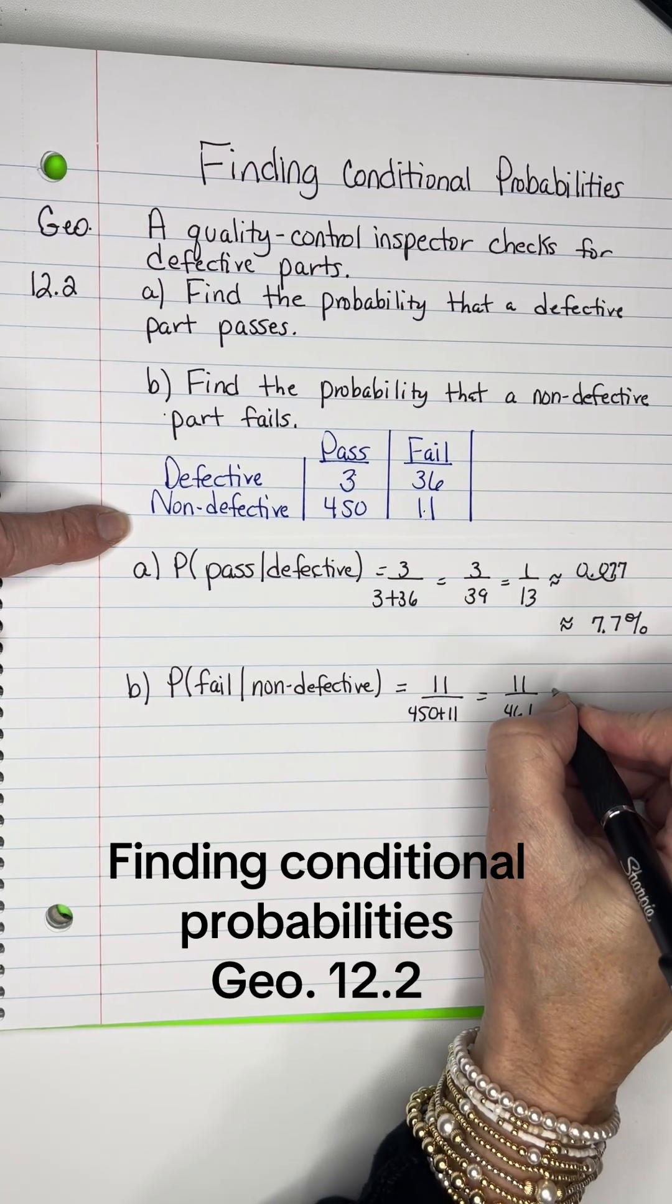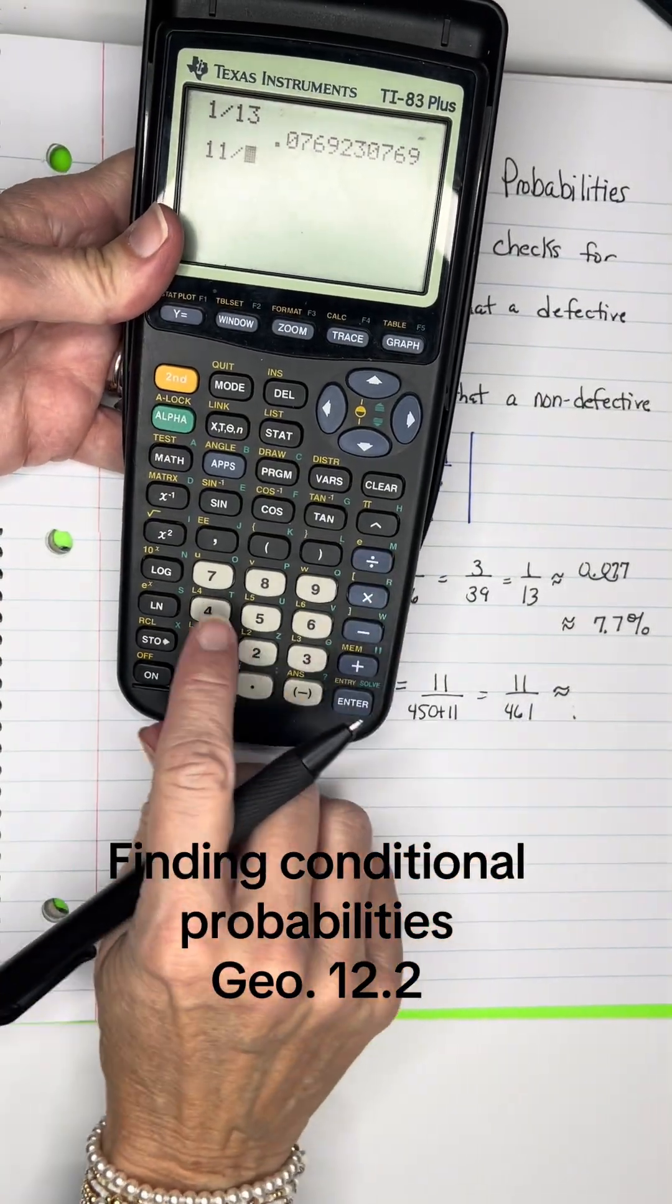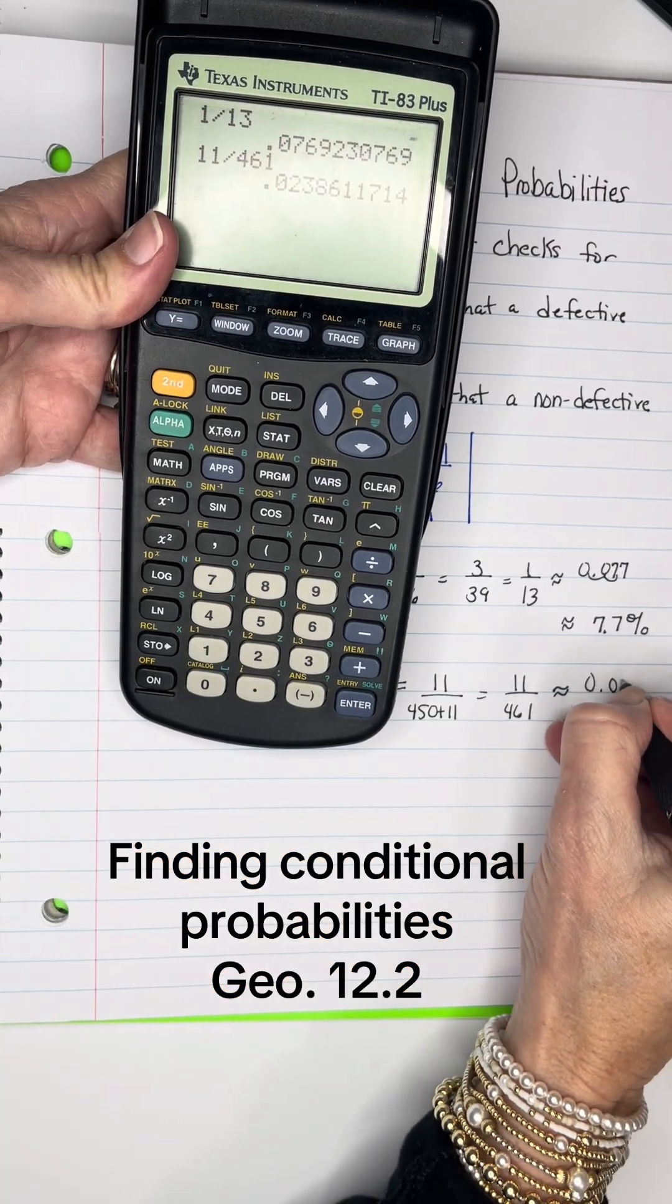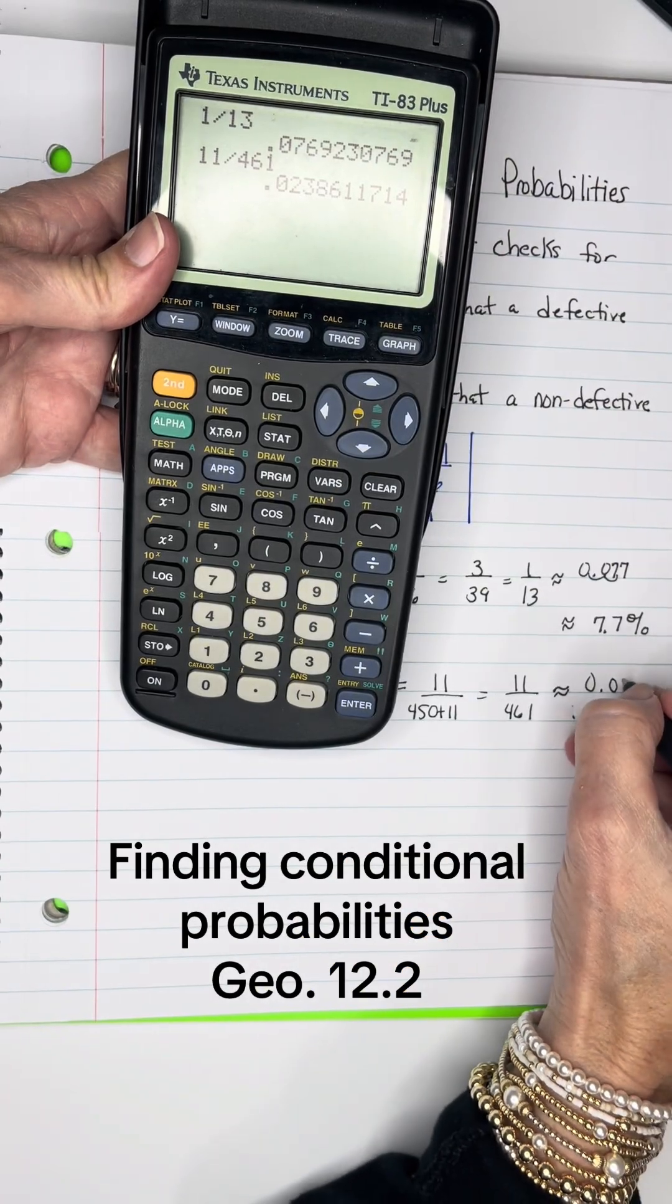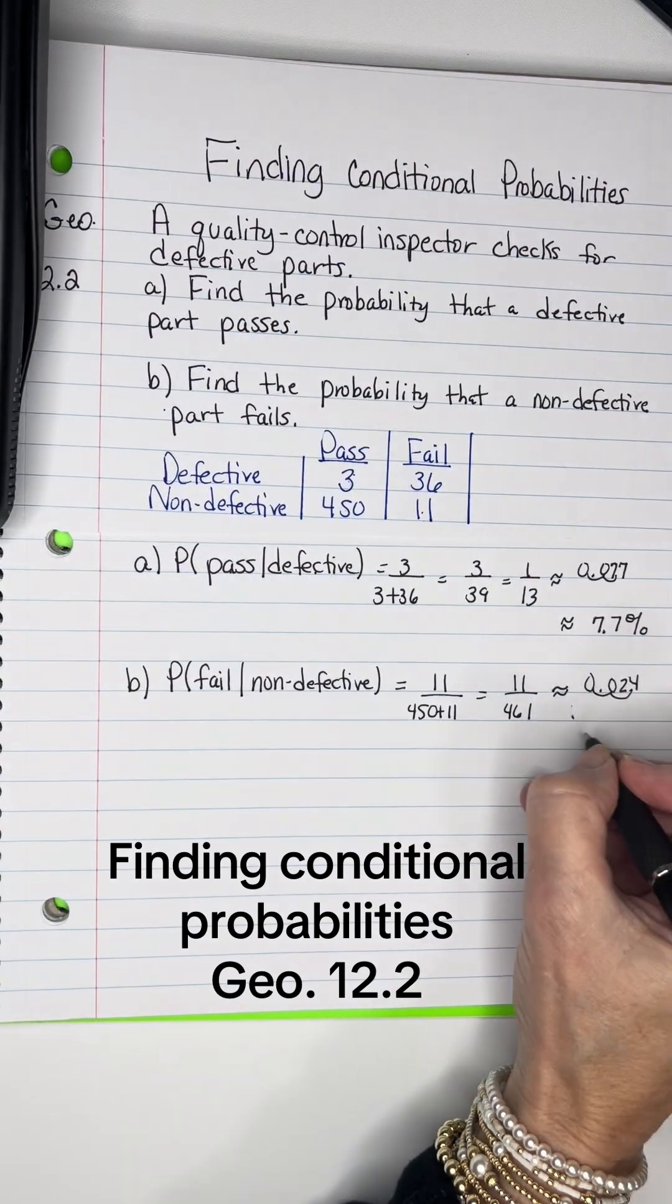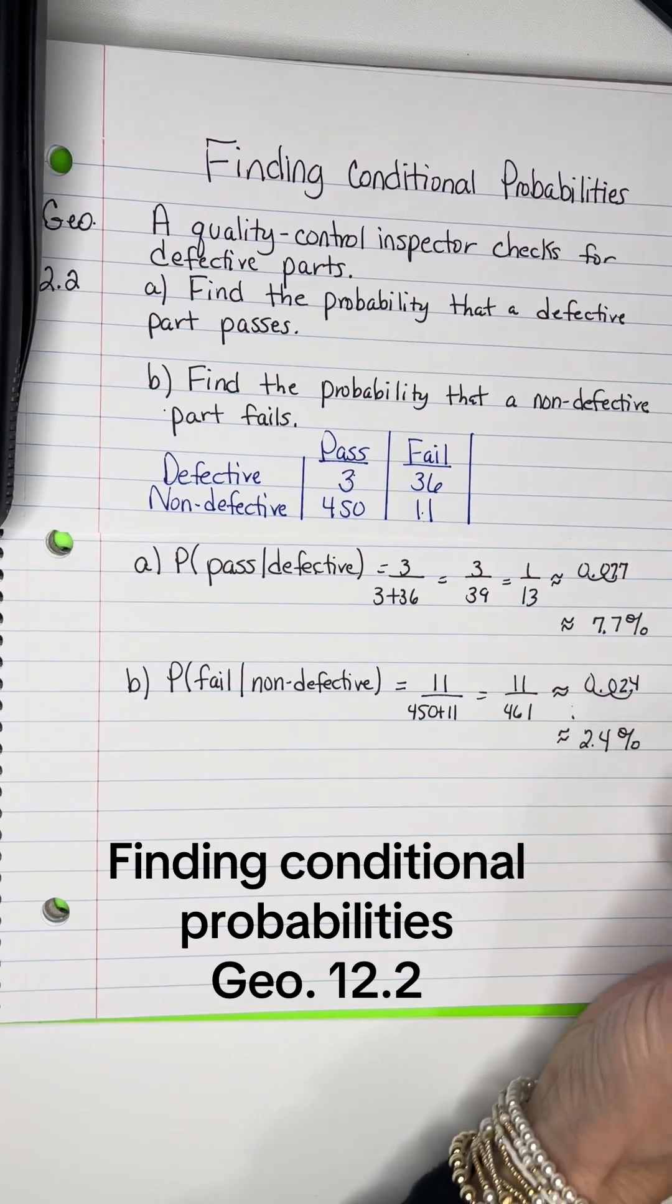Let's see what that is. If I move that decimal over twice, I'm going to get about 2.4%.